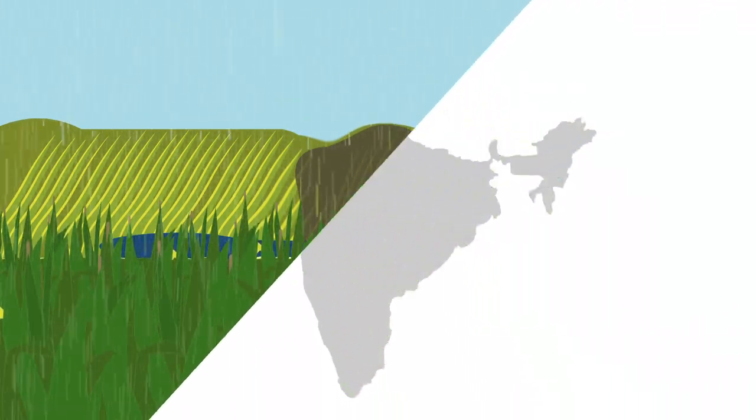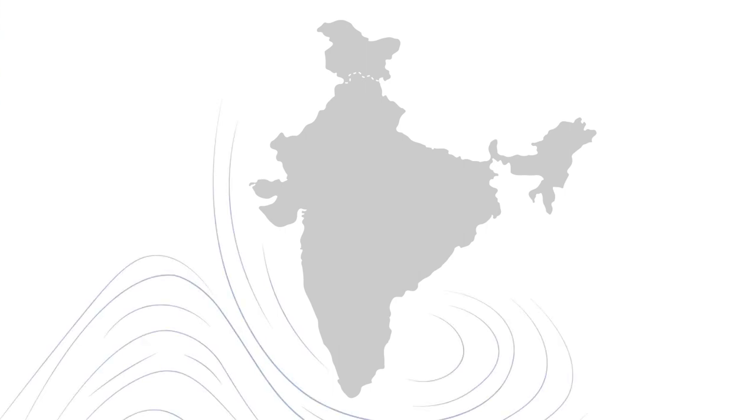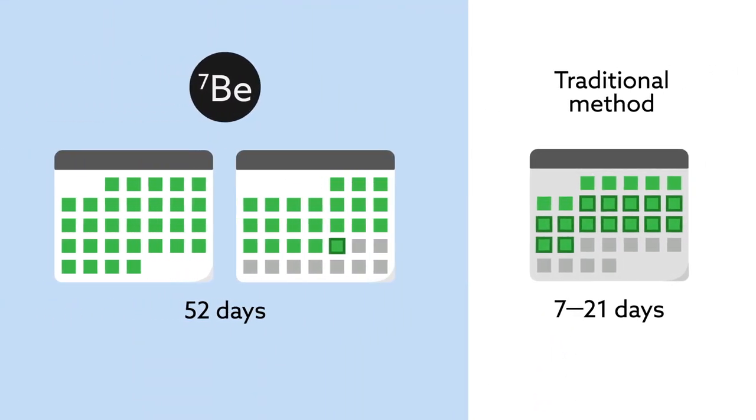European researchers have now devised a way to estimate the monsoon season in India. This innovative approach uses a rare isotope, beryllium-7. The forecasts are not only more accurate than traditional methods, but also available earlier, which could give governments and residents more time to prepare.